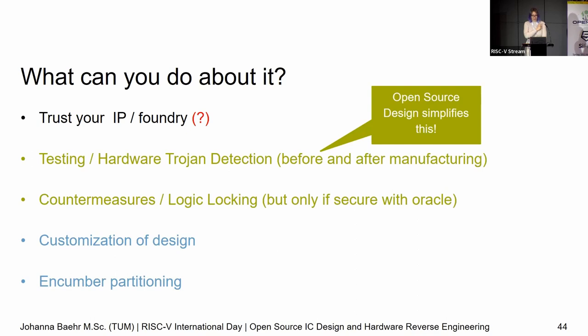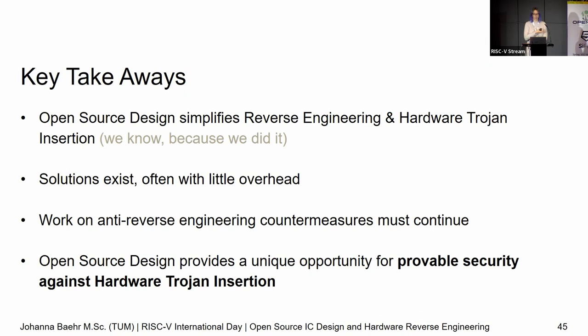So I have some key takeaways. Open source IC design simplifies reverse engineering, which can be great — but it also means hardware Trojan insertion becomes so much easier, going from maybe months of planning to something I can have prepared in my back pocket. Hey, look — OpenTitan design, I've got a Trojan ready for that, put it right in there, a day or two of work. We have solutions, they exist, they don't have much overhead. We even use them already but people aren't really aware, and we must work more in that direction.